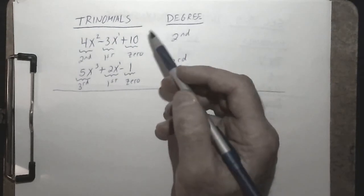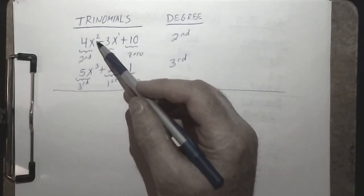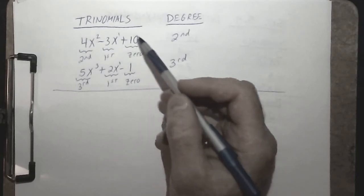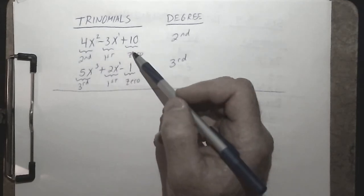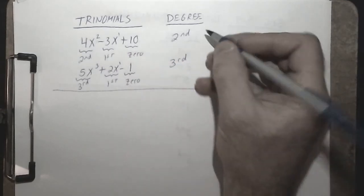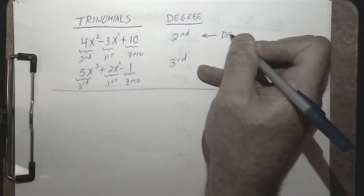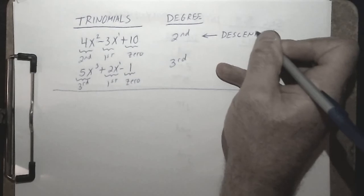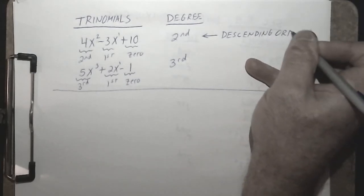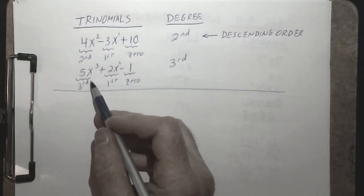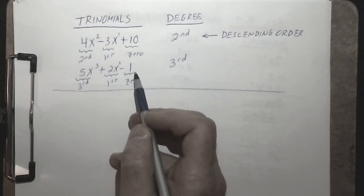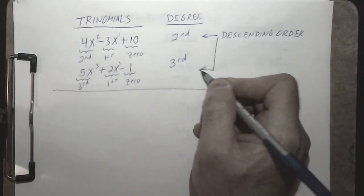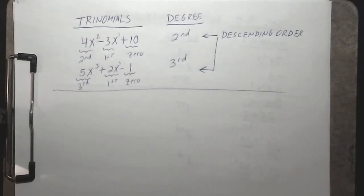One more note: notice that for these trinomials, the degree of each term decreases from left to right. For the second-degree trinomial, we go from a second-degree term down to a first-degree term down to a zero-degree term. When the degrees decrease strictly from left to right, we say the polynomial is in descending order. This trinomial is also in descending order, going from third degree down to first degree down to zero degree. Normally, we like our polynomials written in descending order — it is a custom in mathematics.